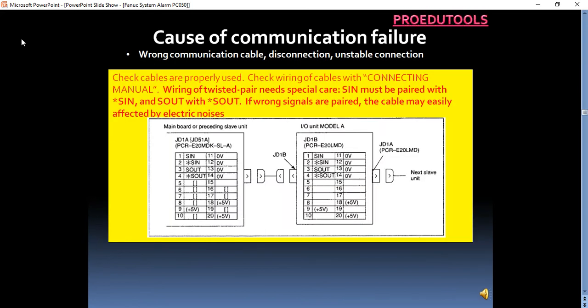Wrong communication cable, disconnection, unstable connection. Check cables are properly used. Check wiring of cables with connecting manual. Wiring of twisted pair needs special care. S-in must be paired with S-in, and S-out with S-out. If wrong signals are paired, the cable may easily be affected by electric noises. Do not wire unused terminals. There are power lines such as plus 24 volts and plus 5 volts, and unintended wiring of these lines may cause malfunction of devices.